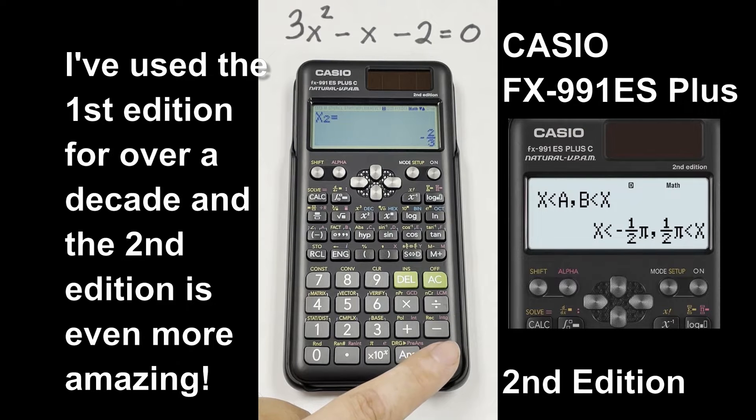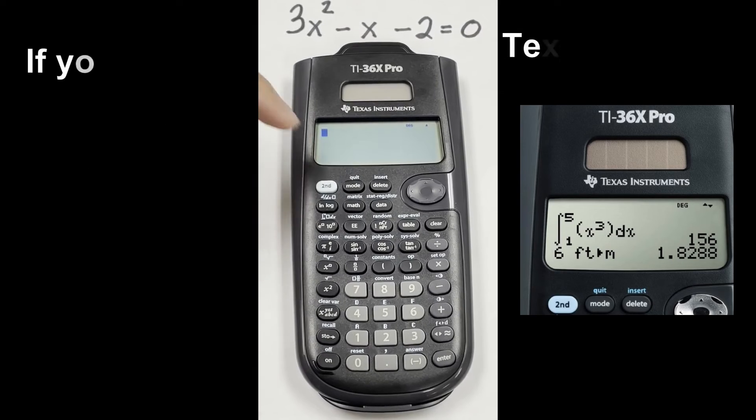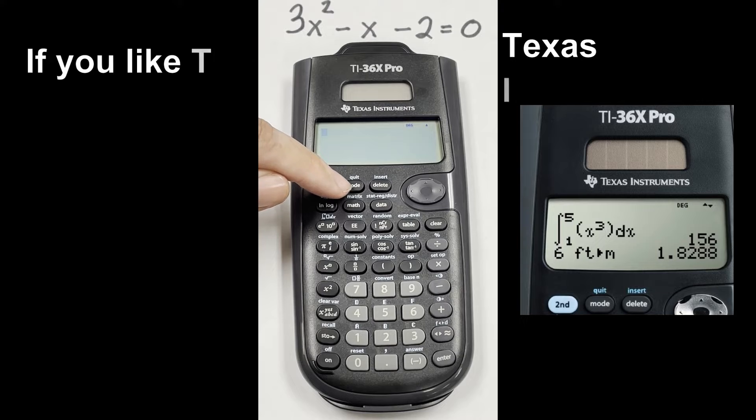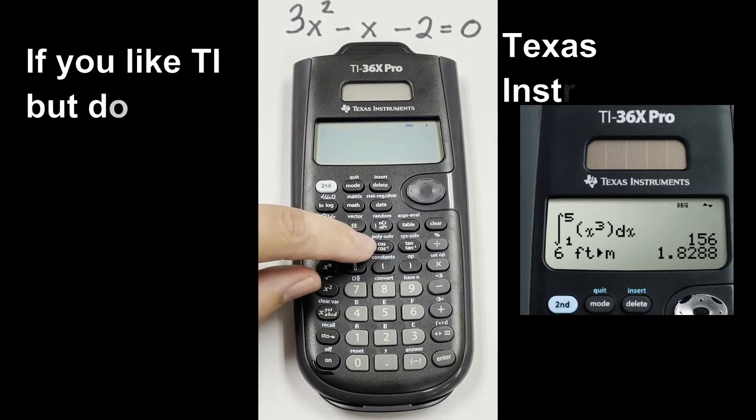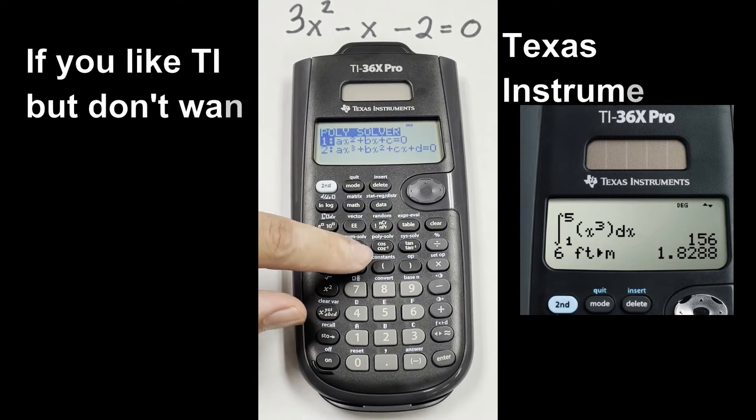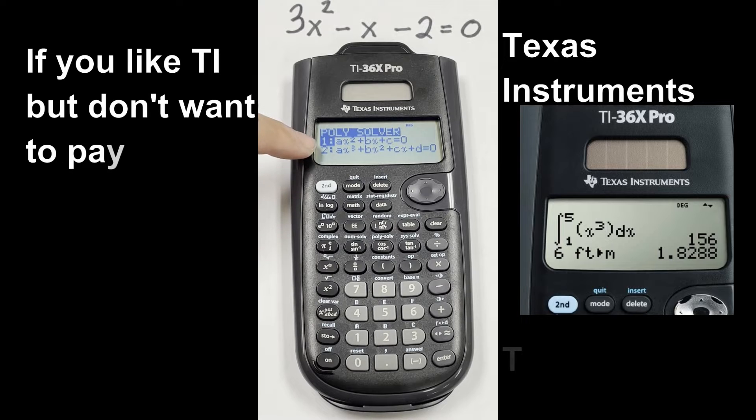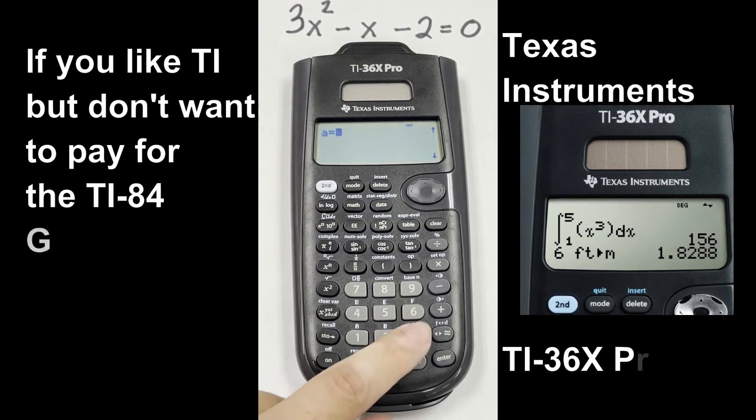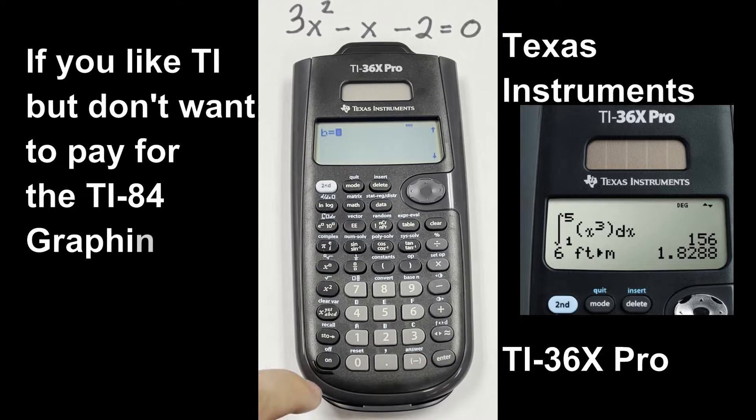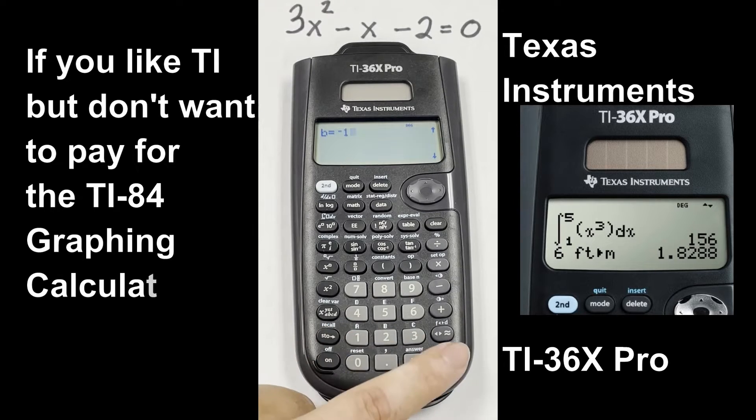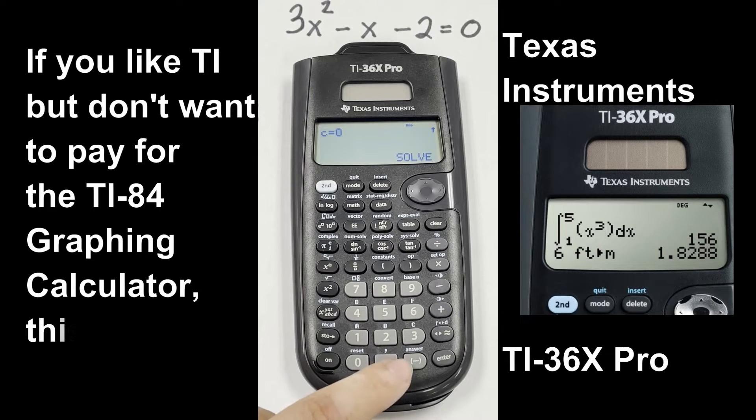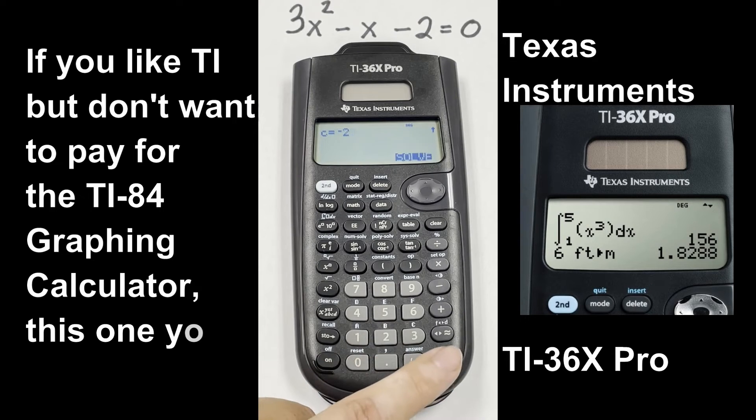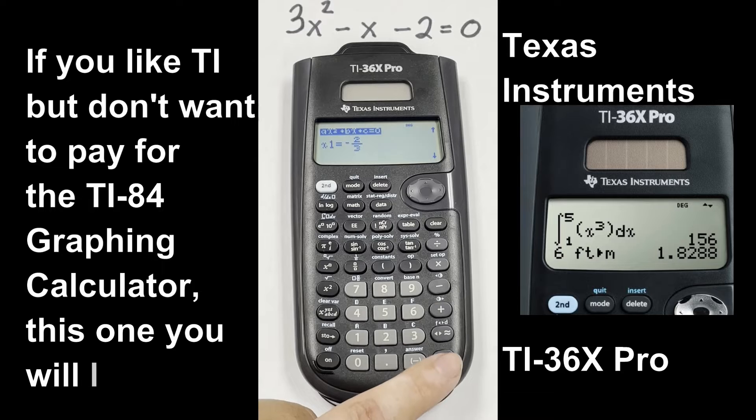For this one it's a little bit different, we're not going to mode, instead we're going to go to polysolve, so second polysolve, and there is our quadratic, number 1. So our A value is 3, our B value, again we're going to use this negative, negative 1, and our C value is negative 2. And solve. So there you get X1 is negative 2 thirds, and X2 is 1.